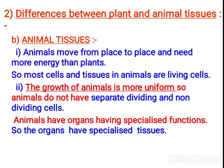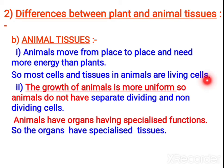Now let us see regarding animal tissues. Animals are able to move from place to place and they need more energy compared to plants. Accordingly, most of the animal tissues present are living tissues. Even though dead cells exist — like hair and nails — comparing to plants, we have mostly living cells. In the case of growth of animals, it is more uniform throughout the body; there is no separate meristematic tissue like in plants — growth occurs all over the body uniformly.